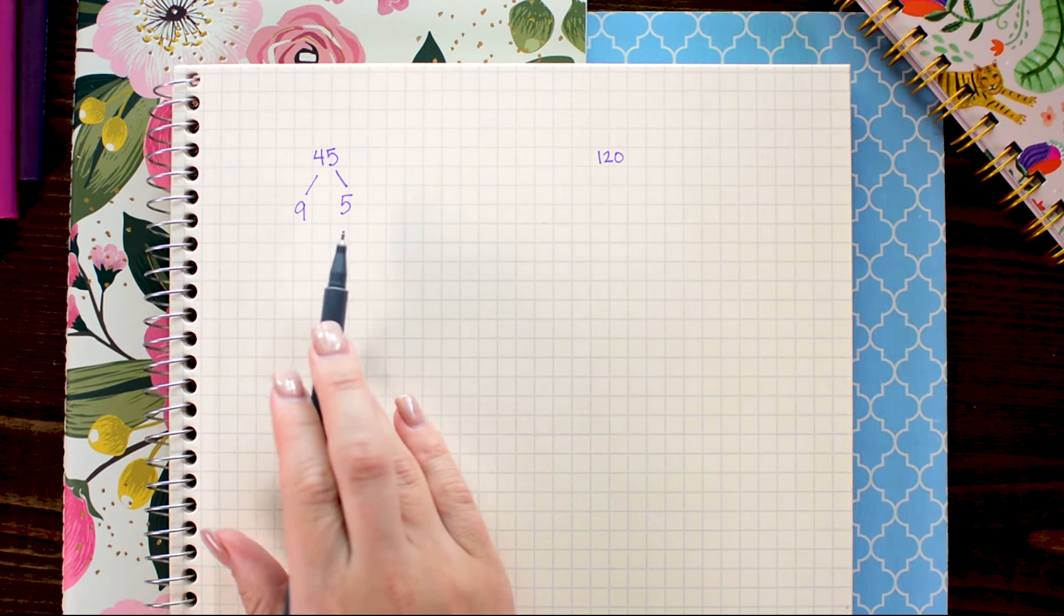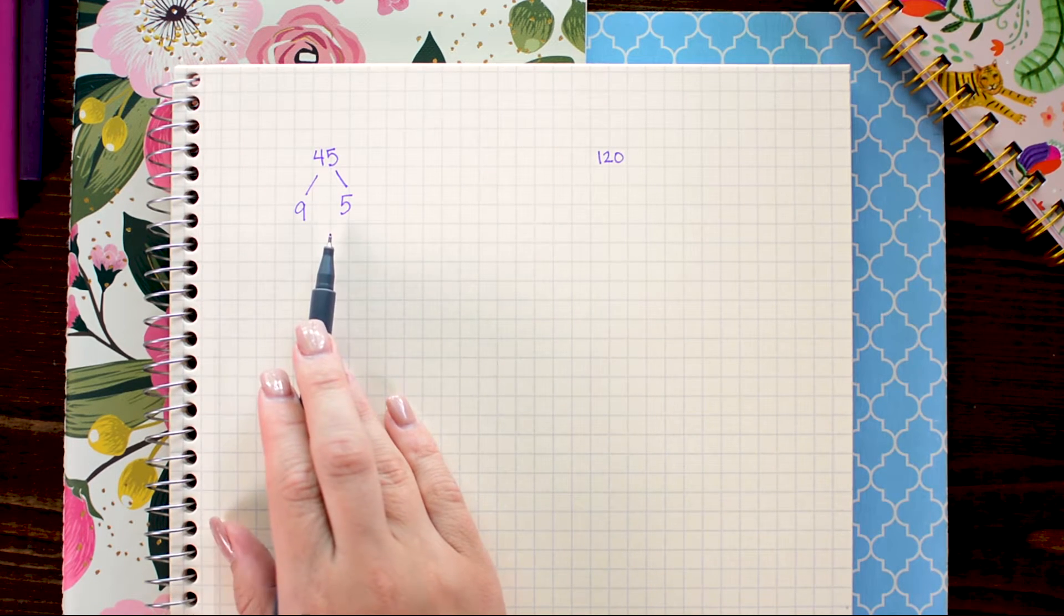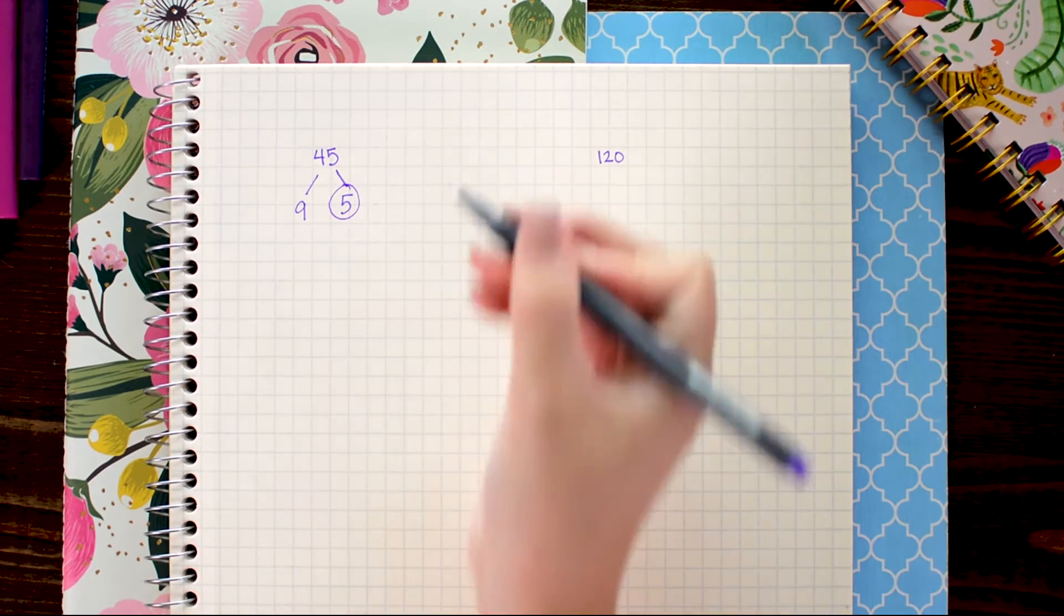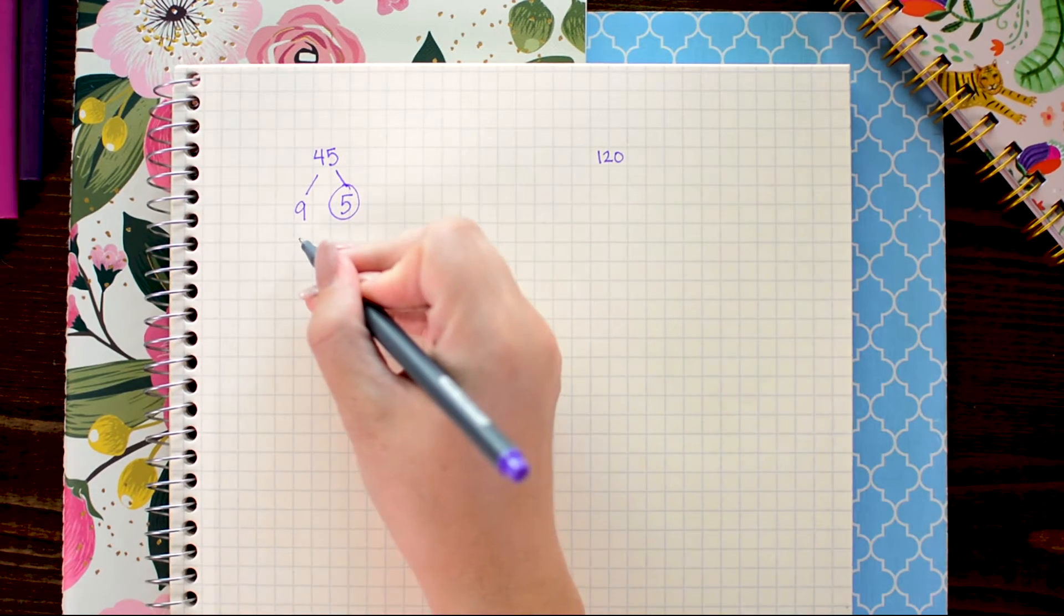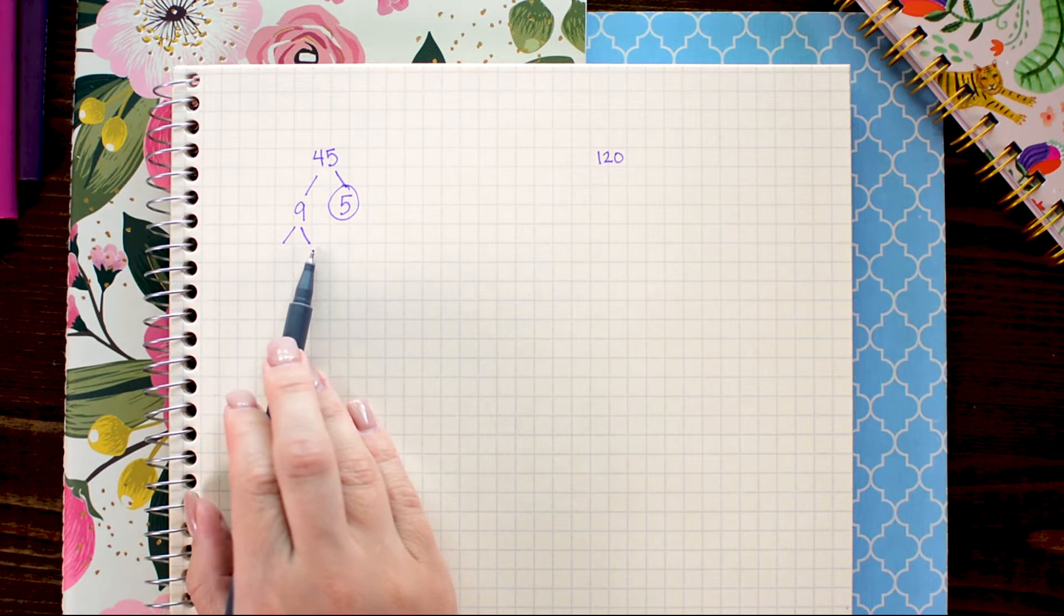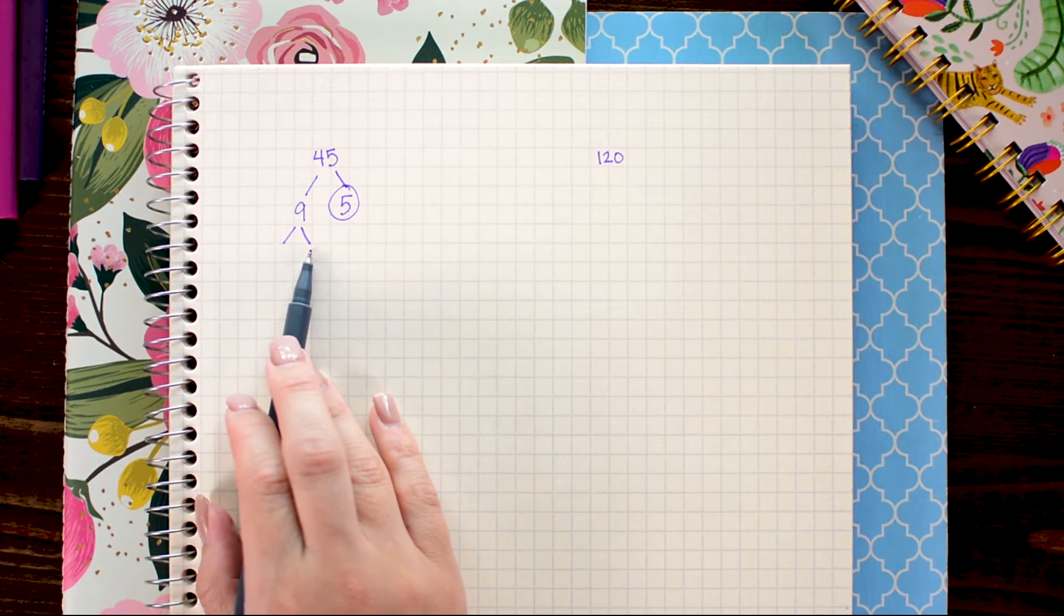Once I get a prime number that's the end of that branch so I'm just gonna circle it and then I'm gonna go to whatever numbers are remaining whatever branches I have and put two more branches and repeat this process.